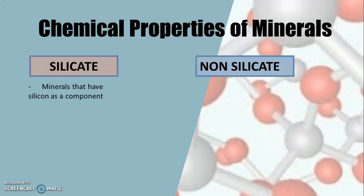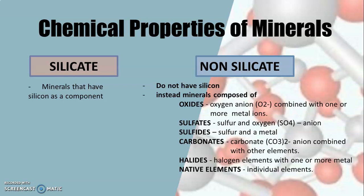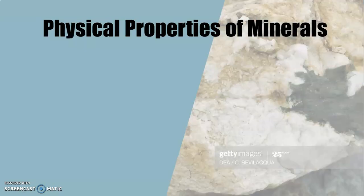Silicate minerals have silicon as the main component. Non-silicate minerals do not have silicon. Instead, non-silicate minerals are composed of any of these: oxides, sulfates, sulfides, carbonates, halides, and native elements. The physical properties of minerals determine the characteristics or the physical appearance of minerals by its color, luster, fracture, cleavage, and hardness.